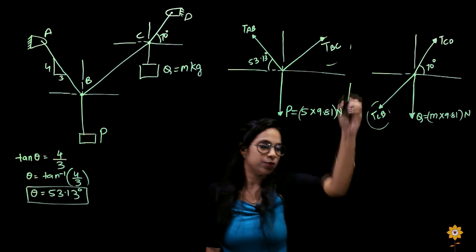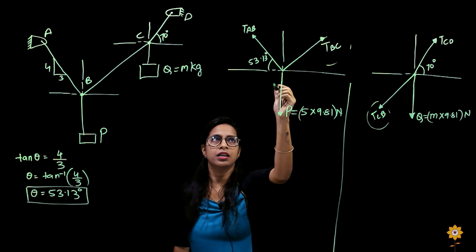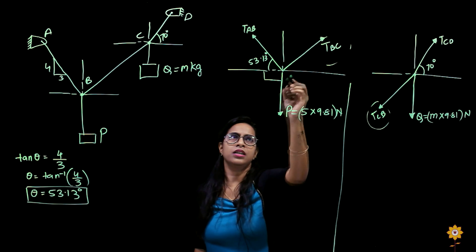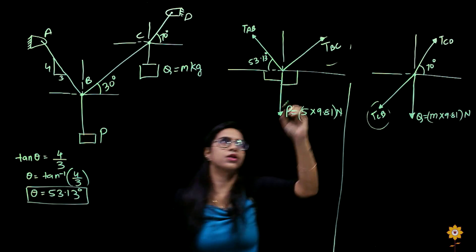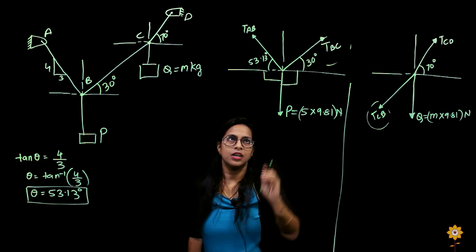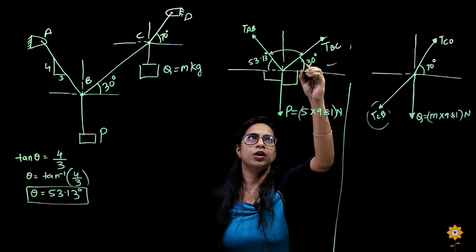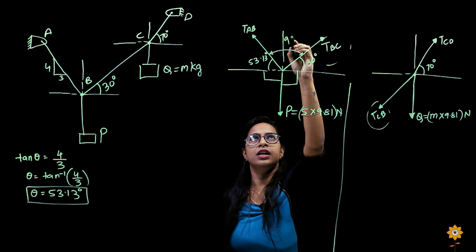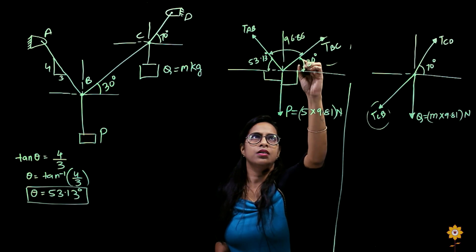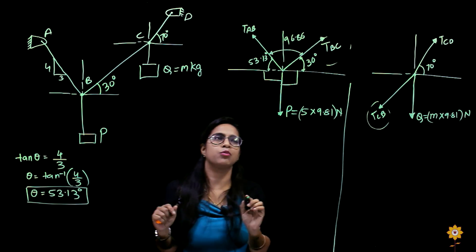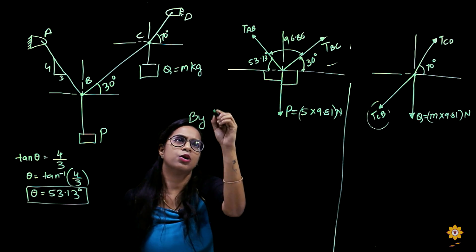We'll start from point B. I need to find the angles first. This angle is 53.13 degrees, this is 90 degrees, this is 90 degrees, and this value was given to be 30 degrees in the diagram. So calculating: 90 minus 53.13 plus 30 plus 90 gives this angle as 96.87 degrees. I'll solve it by Lamy's theorem, though you can also solve using sum of forces in x and y.